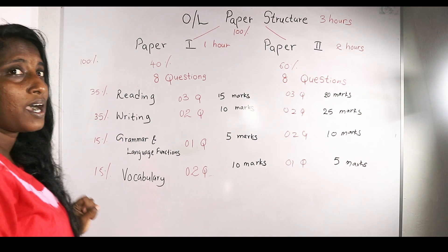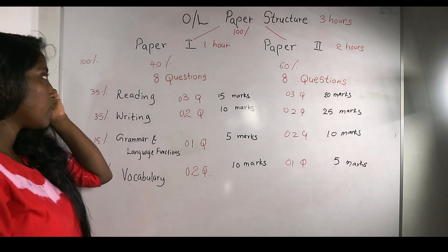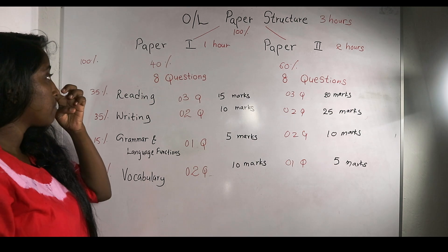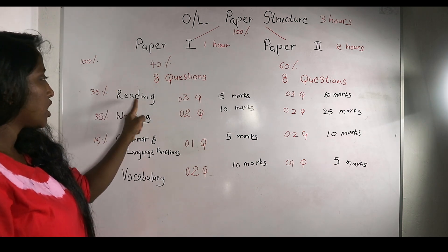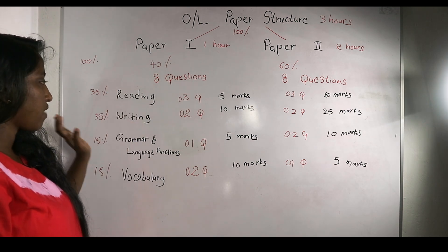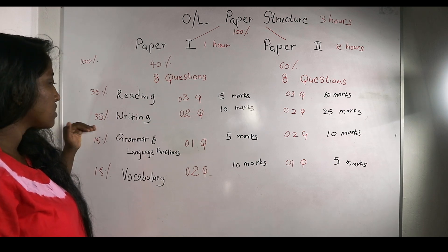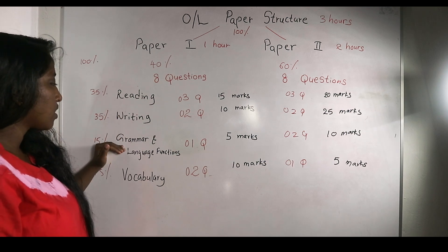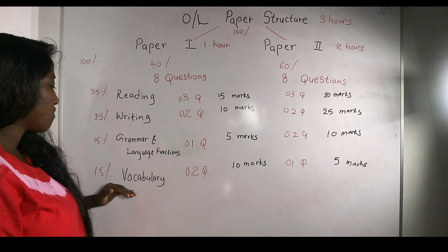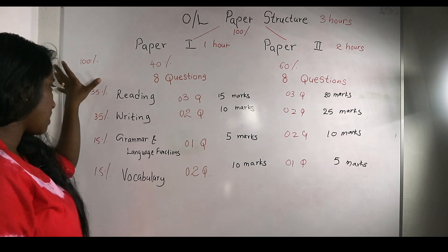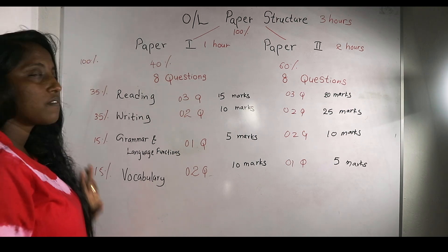Total marks allocated: if you have 100 marks in the paper, reading is 35 marks, writing is 35 marks, grammar and language functions is 15 marks, and vocabulary is 15 marks — totalling 100 marks.